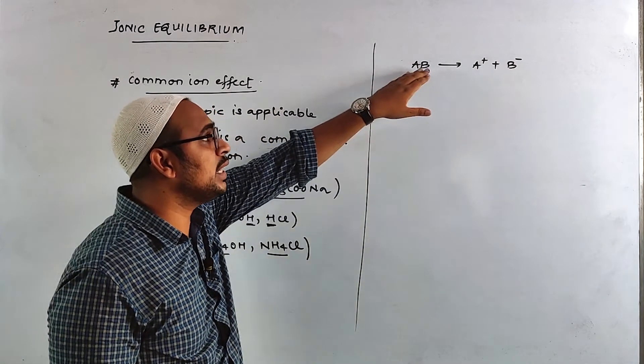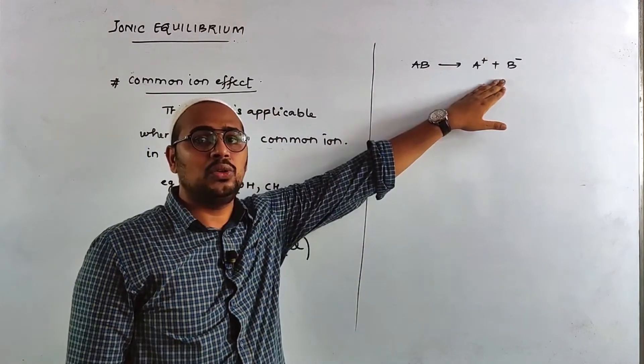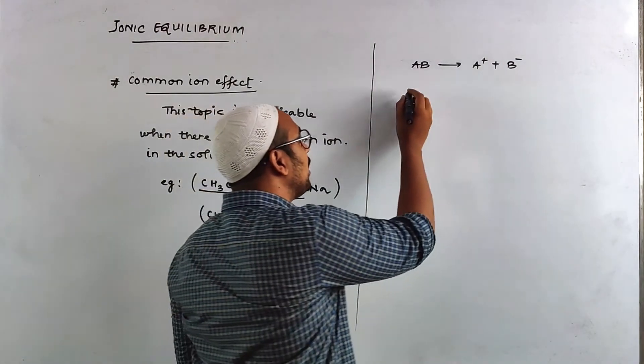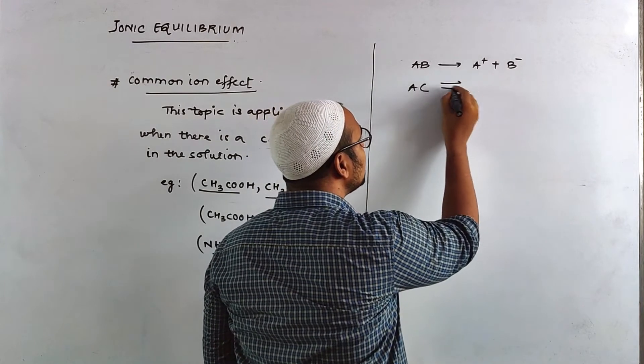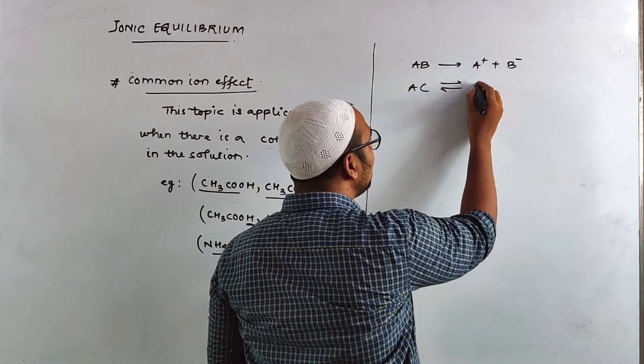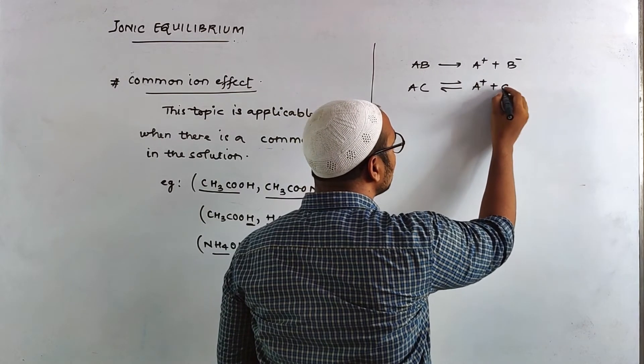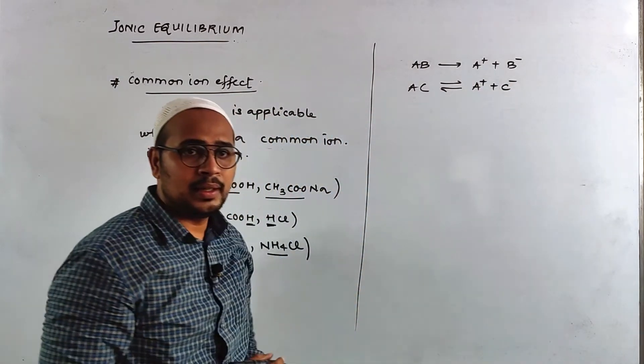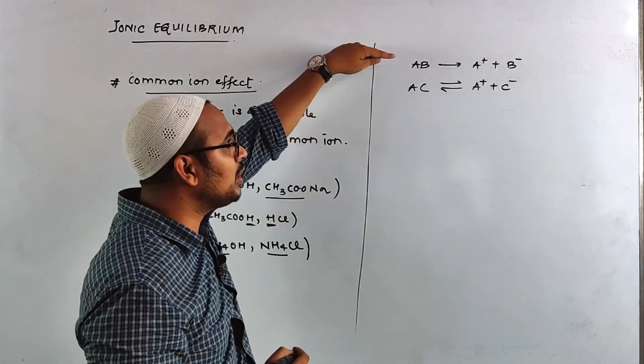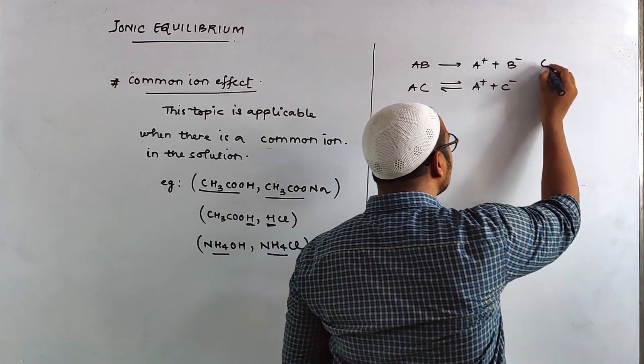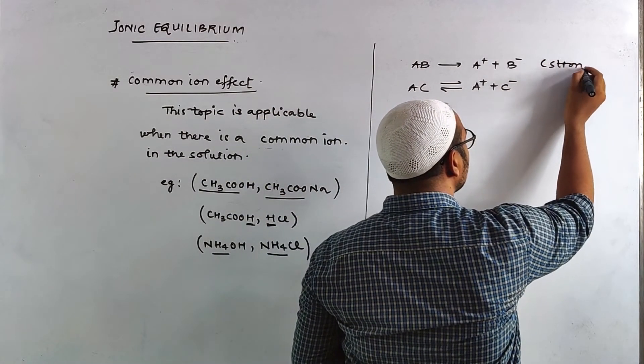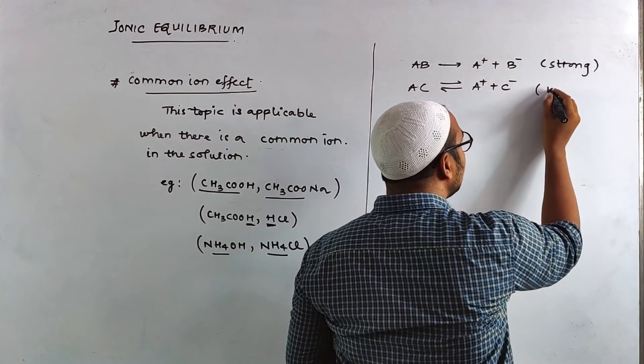Arrow will be strong. The second component is AC. AC we consider that it is weak. So here you have A plus and C minus. What do you understand? One component is strong. One component is weak.